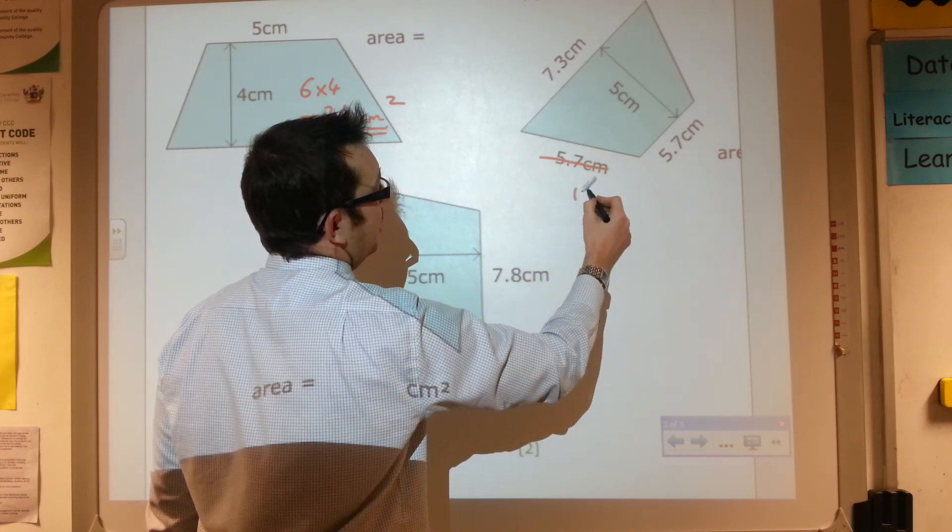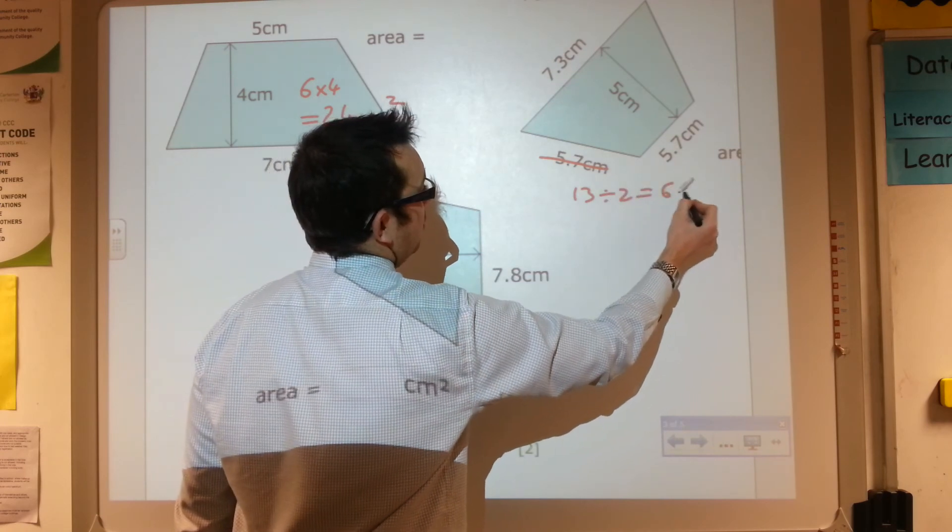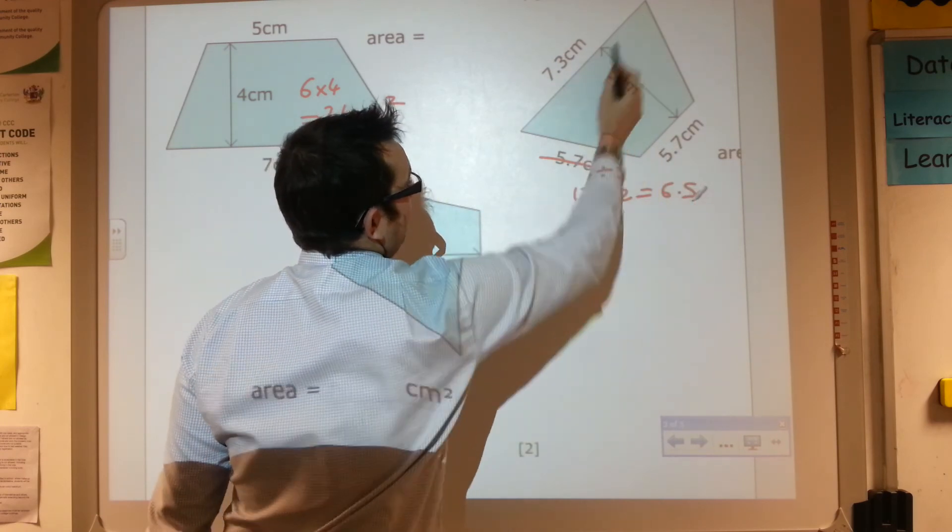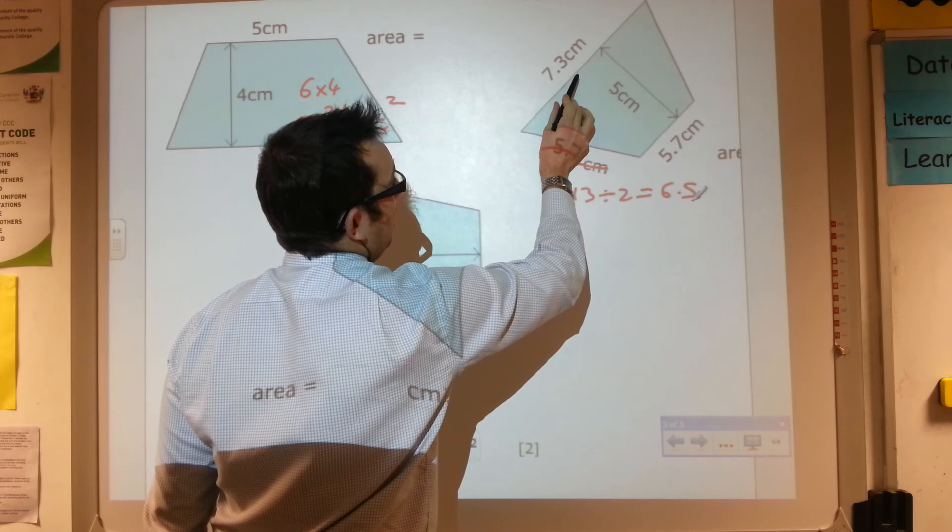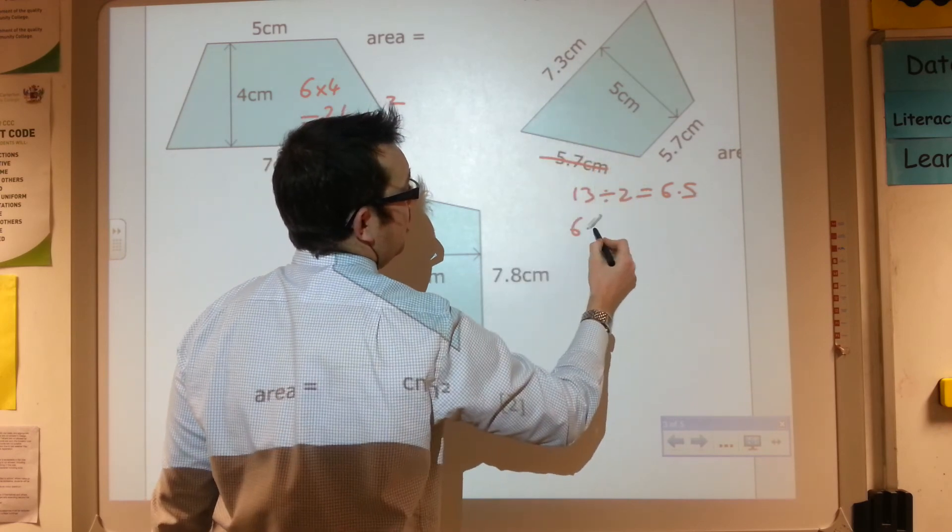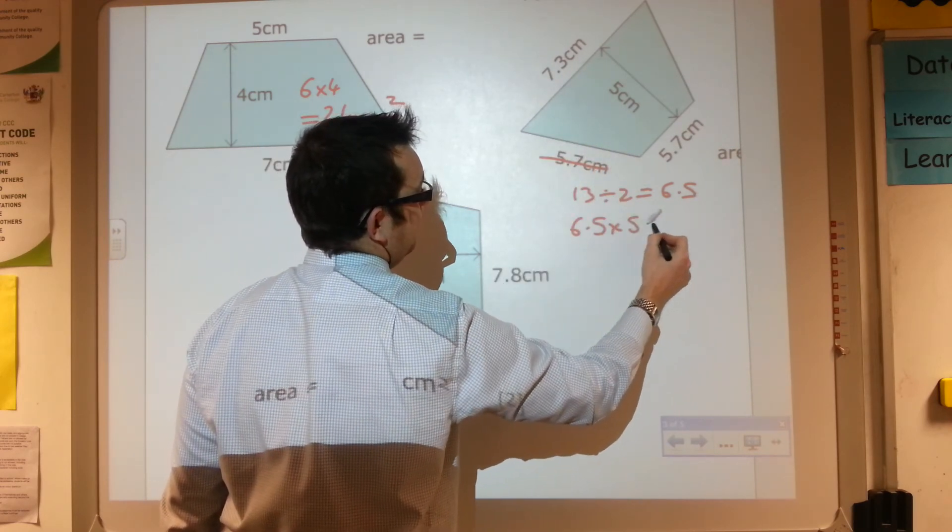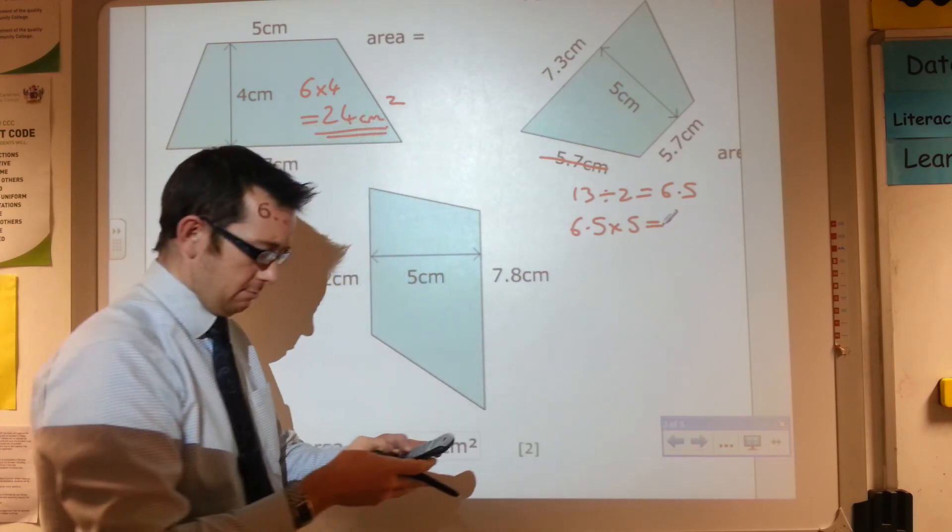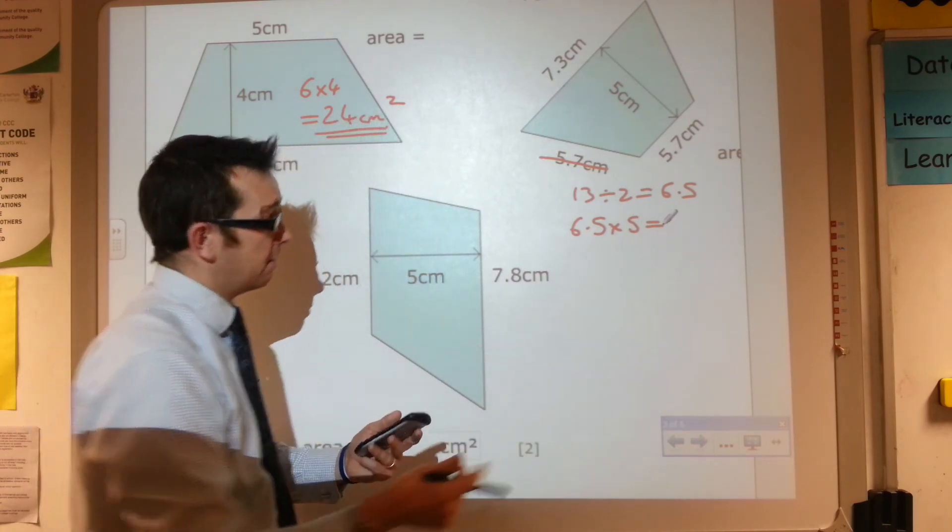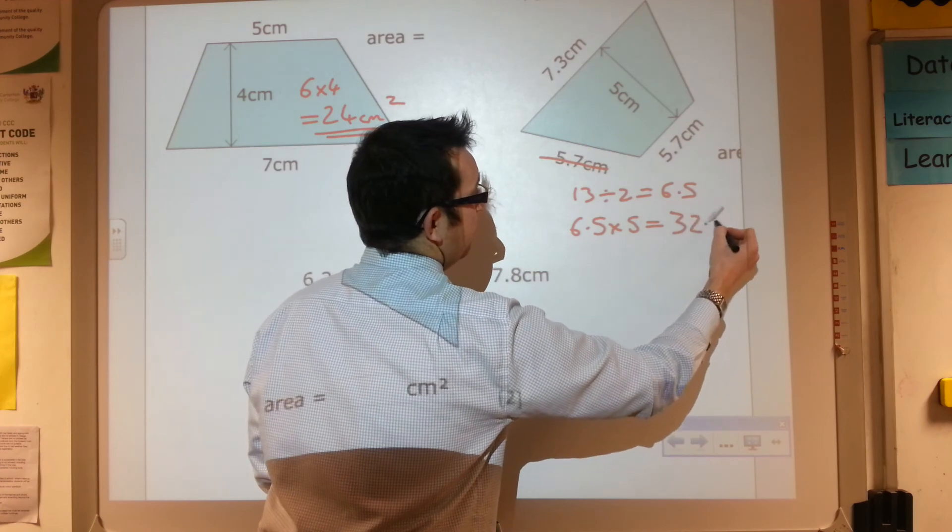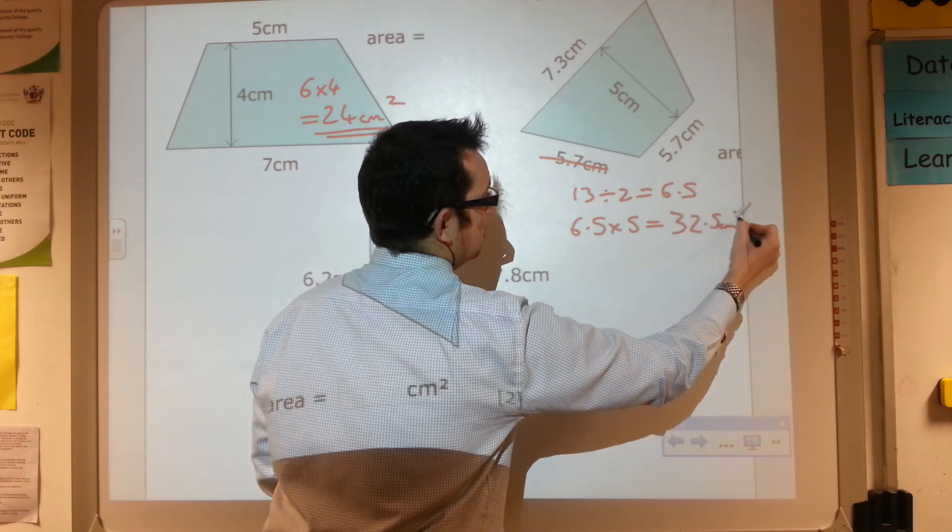So divide that by 2. 13 divided by 2, that's 6.5. That's the average length there. So I need to do 6.5 times 5, and that is going to be 32.5 centimeters squared.